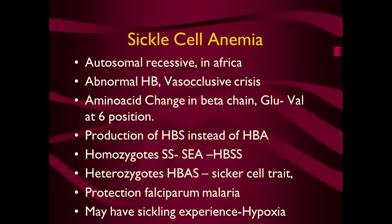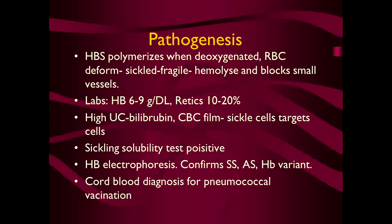Pathogenesis: hemoglobin S polymerizes when deoxygenated. RBCs deform and become sickle-shaped; they are very fragile, hemolyze easily, and block small blood vessels. On laboratory examination, hemoglobin level will be 6-9 g/dL and reticulocyte count is very high — as high as 20%. The patient will have unconjugated hyperbilirubinemia and the film will show sickle cells and target cells. The sickle solubility test will be positive. HB electrophoresis is the confirmatory test showing HbSS, HbAS, HbSC or HbS beta-plus thalassemia patterns; cord blood can also be used for early diagnosis.